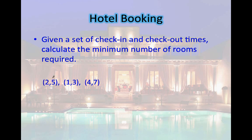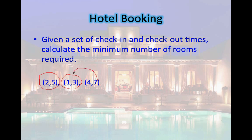For example, you assign guest one to a room. Guest two comes and on days one through three there's clearly a conflict, so you assign room two. For the third guest, by the time he arrives guest two has already checked out, so you could assign the same room. Clearly you just need two rooms to accommodate these three guests, so two is the minimum number of rooms required.